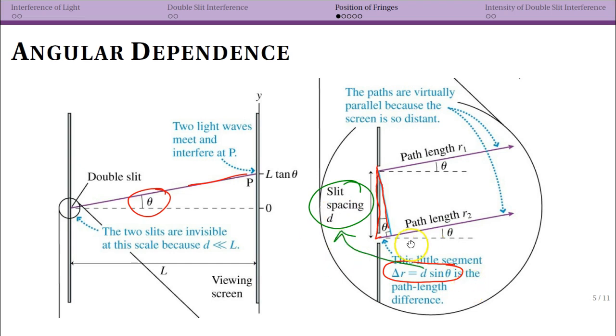Notice that this is completely independent of what this length is. This does not depend on the separation between these. Right now we're talking about the angular dependence. What we typically do is think about the positional dependence of these fringes, and to do that we need to focus on a different aspect of the geometry after we focus on the angle.